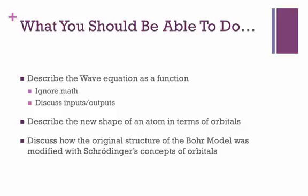You should be able to describe the new shape of the atom in terms of orbitals, and this is something we're going to build more in the class. When you see the pictures of the orbitals, this discussion will make a little bit more sense. And then finally, you should be able to discuss how the original structure of the Bohr model was modified with Schrödinger's concept of orbitals, and how we went from the simple rings energy level diagram over to a much more complex, much more detailed energy level diagram with our orbitals.